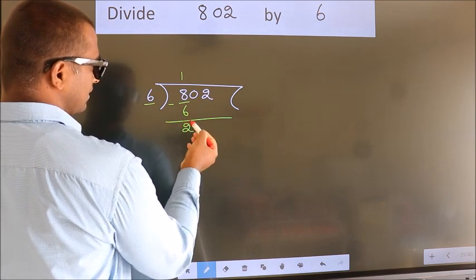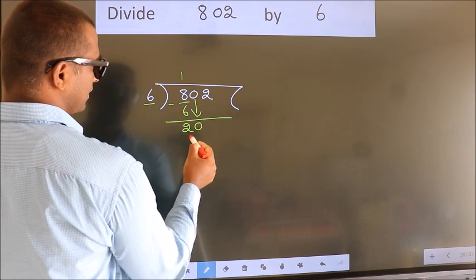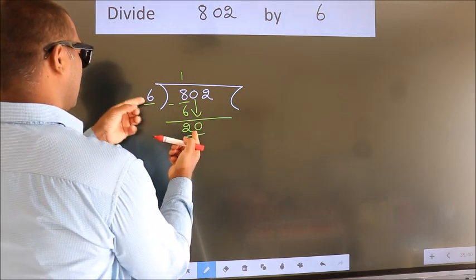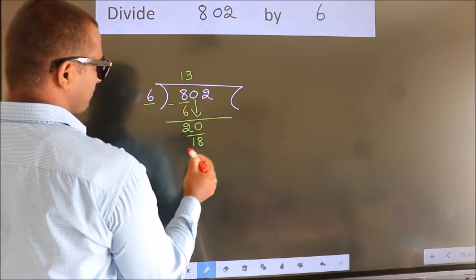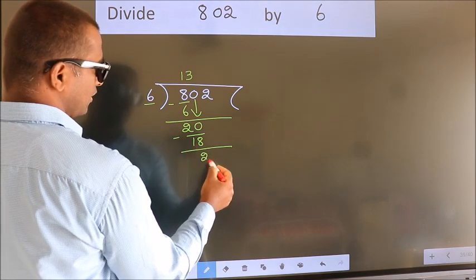After this, bring down the beside number. So, 0 down. So, 20. A number close to 20 in 6 table is 6 threes, 18. Now we subtract. We get 2.